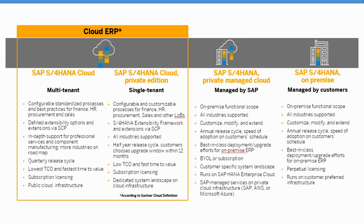Now let's shift our attention to the next product, which is the single-tenant edition. Right off the bat, you will notice a lot of similarities between the single-tenant and the multi-tenant edition. The key differentiators are that the STE is more comprehensive in its industry coverage, has a release every six months instead of every three months for the public cloud, and very importantly, STE has a dedicated system landscape on cloud infrastructure. To give you an analogy, MTE is like renting an apartment in an apartment building, while STE is similar to renting a single-family house.